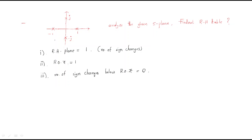If you observe, there are four poles — one, two, three, four — arranged in a symmetric manner. These are symmetric poles. That's why we should have an auxiliary equation. For that purpose, we will now directly find out the transfer function.